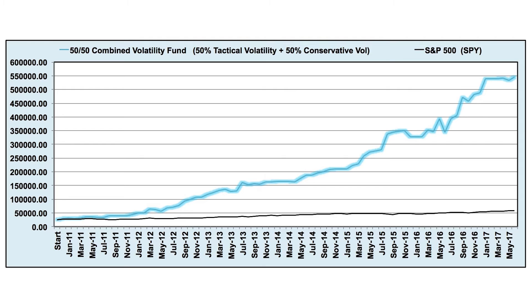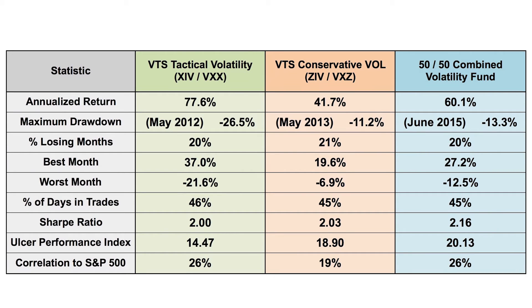So those are the two strategies. Both of them hold cash over 50% of the time, so aside from a few bumps and bruises along the way, we should have a pretty consistent experience. Investors are going to choose the strategy that best suits their long-term goals, but something I wanted to show actual numbers for is what happens when the two of them are combined. I'm calling this the 50-50 Combined Volatility — 50% is the VTS Tactical Volatility trading XIV and VXX, and 50% VTS Conservative Vol trading ZIV and VXZ. The point is to further improve those risk-adjusted metrics. I'll go through the two most important ones, starting with the Ulcer Performance Index.